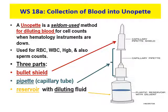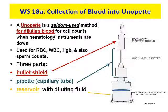This is the blood collection method, and this picture shows the UNAPET. The UNAPET is a seldom-used system for diluting capillary blood for certain laboratory tests. There are many tests that can be performed using a UNAPET, including red blood cell count, white blood cell count, platelets, hemoglobin, and reticulocyte count. It's not usually the equipment of choice in a large laboratory, but some smaller doctor's offices, clinics, or hospitals may use it. A lot of veterinary offices also use the UNAPET to do lab results on their animals.